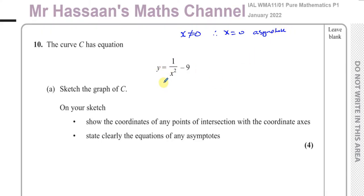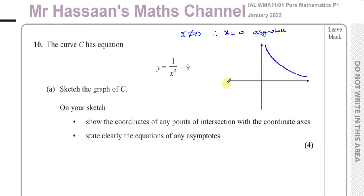Let's think about what 1 over x squared looks like by first considering 1 over x. The graph of 1 over x has a standard shape when x is positive, and goes the other way when x is negative. For 1 over x squared, when x is negative, y will always be positive. For example, when x is minus 1, y is plus 1, whereas for 1 over x, when x is minus 1, y would be minus 1.